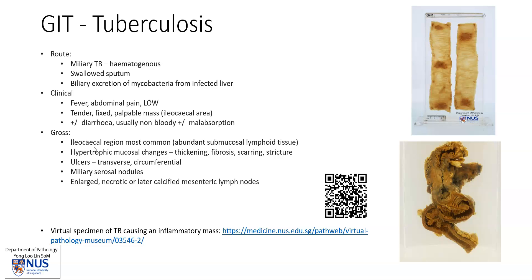Grossly, the ileocecal region is most commonly affected, and this is because there is lots of lymphoid tissue in the submucosa in this region. There is often thickening of the mucosa with hypertrophic mucosal changes. And later on, there can be fibrosis, scarring, strictures, and also rarely fistula formation.